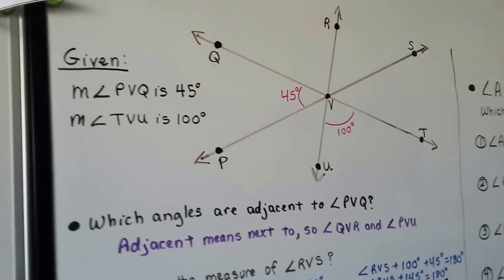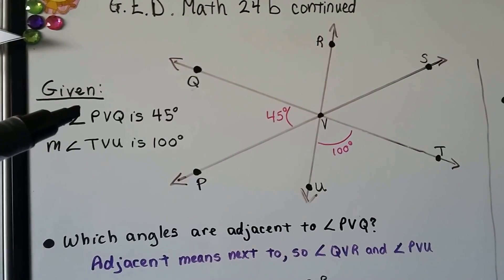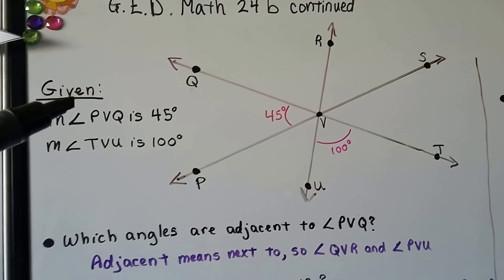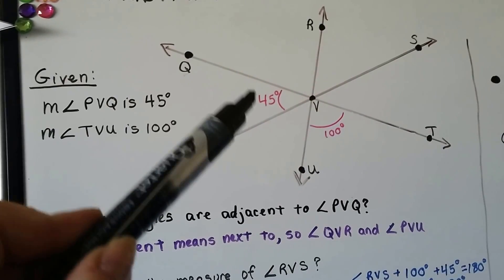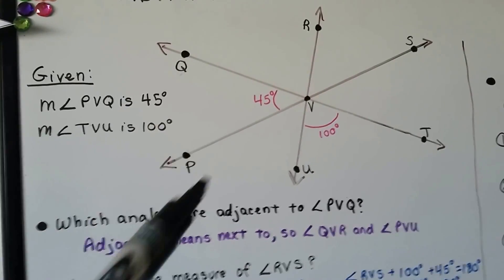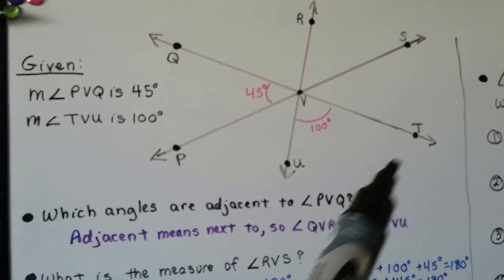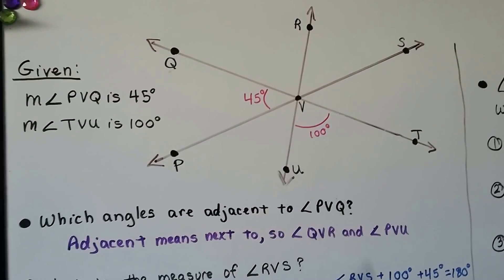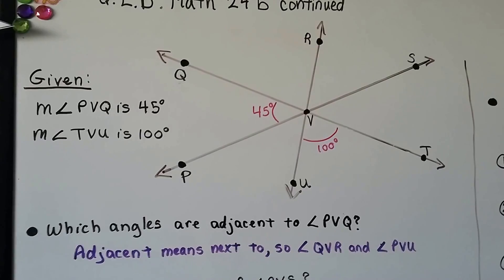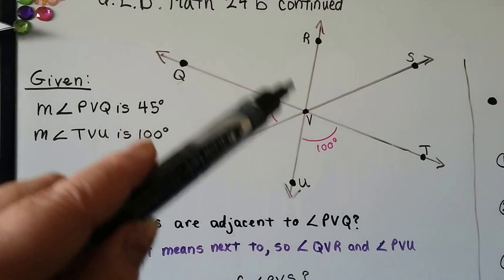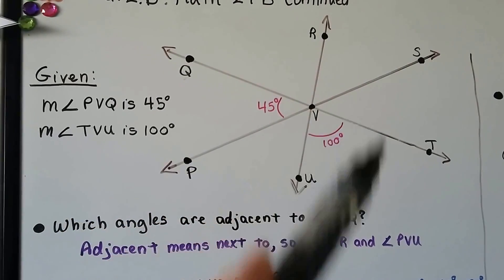Now we've got this big drawing. It says it's given that the measure of angle PVQ is 45 degrees — so this one is 45 degrees. And the measure of angle TVU is 100 degrees — TVU is 100 degrees. Since vertical angles are congruent, if that's 100 degrees then that's 100 degrees, and if that's 45 degrees then that's 45 degrees.